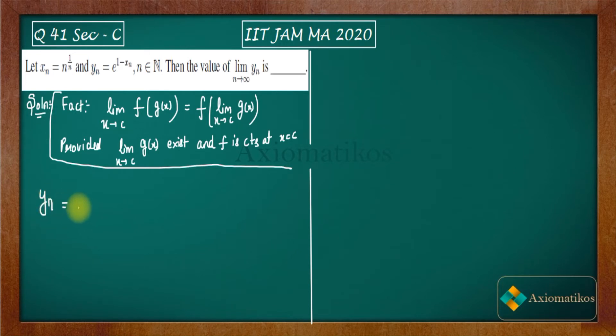That means when you are evaluating this limit, limit N goes to infinity YN, then what actually you have to do, E to the power 1 minus XN, you can just write this limit like this. E to the power limit N goes to infinity 1 minus XN. This is what you can do by your formula. But we have to also check that F should be continuous.